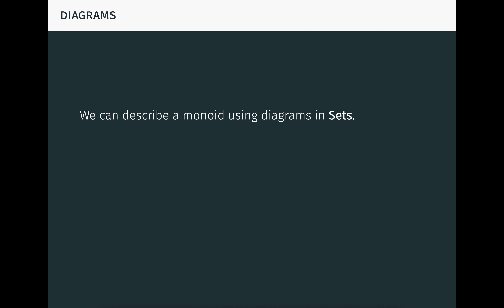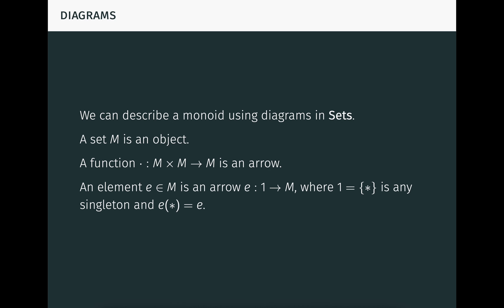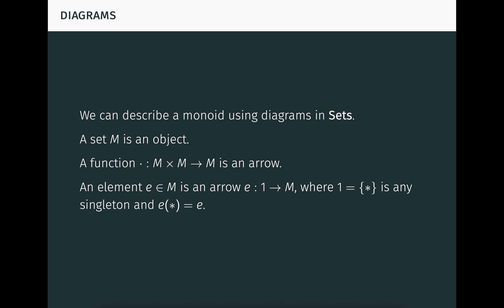We can describe a monoid using diagrams in the category of sets. A set is, of course, an object in this category. A function on that set is, of course, an arrow in the category. Importantly, even an element of the set can be represented as an arrow from one to the set, where one is any singleton — this arrow, a function, just picks out the element in question. Now, associativity of the operation means that this diagram commutes. The arrow on top here is defined like this, and it's actually a natural isomorphism. You should pause the video and confirm that this commutative diagram is equivalent to the associativity equation in the definition of a monoid.